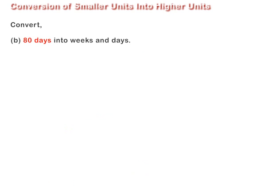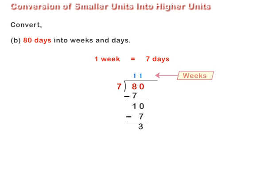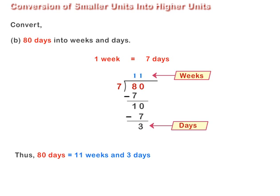Let us convert 80 days into weeks and days. To convert 80 days into weeks and days, we divide 80 by 7 because 1 week is equal to 7 days. Observe the solution on screen. Here, the quotient represents weeks and the remainder represents days. Thus, 80 days are equal to 11 weeks and 3 days.